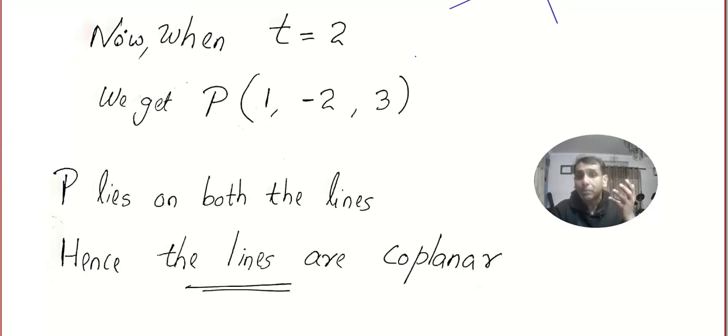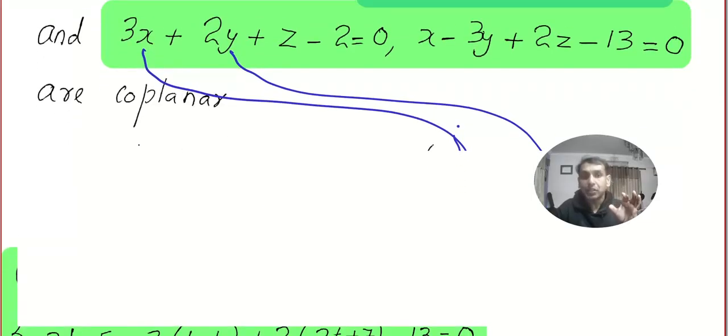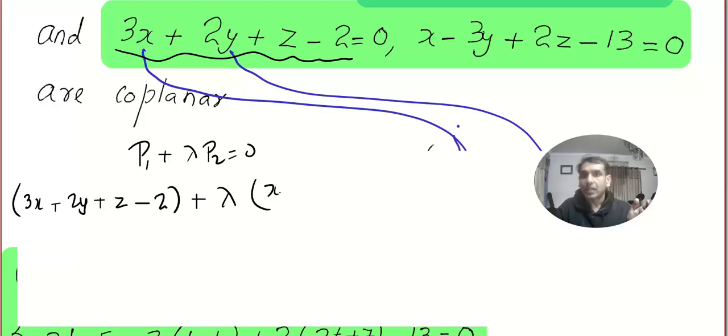Now the last part: What is the common plane? What I am planning to do is I will go for the method that I explained in the beginning. That is, we will write the required plane as P₁ + λP₂ = 0. Make sure all the terms are on one side. So we get the answer to be 3x + 2y + z - 2 + λ(x - 3y + 2z - 13) = 0.